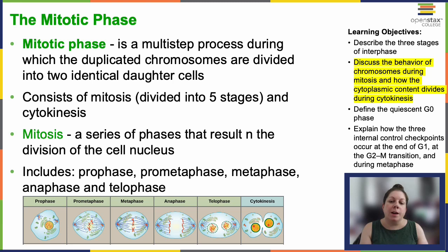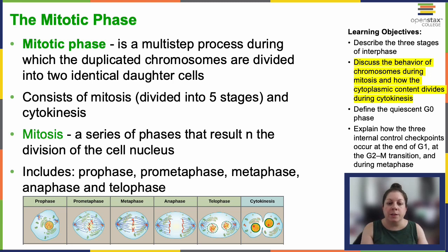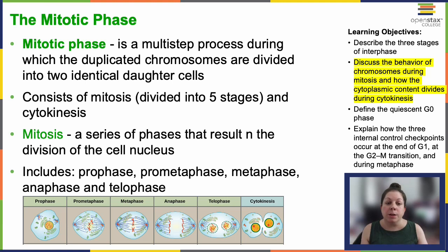Mitosis is made up of five dedicated stages for nuclear division. We have prophase, prometaphase, metaphase, anaphase, and telophase. And then finally, after division has been completed, we have cytokinesis, where the cytoplasmic components are actually split, generating our two daughter cells.